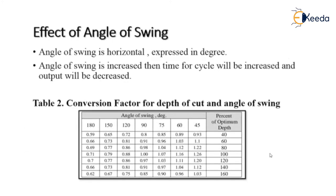The angle of swing affects the output of the power shovel. The angle of swing is always horizontal and expressed in degrees — it is the angle between the position of the bucket when excavating and when discharging the load. As the angle of swing increases, the time per cycle increases and output decreases. Therefore, the angle of swing should not be increased.